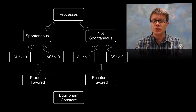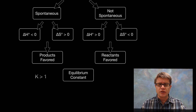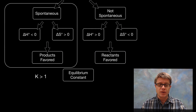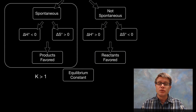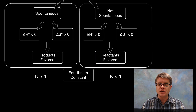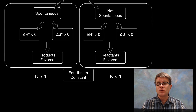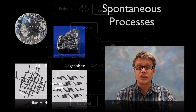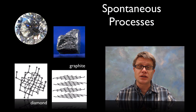To figure out if we're favoring the products or the reactants, we can use something called the equilibrium constant. If we ever see an equilibrium constant greater than 1, we know that's going to favor the products and it's going to be spontaneous. If it's ever less than 1, we're going to see a non-spontaneous reaction.